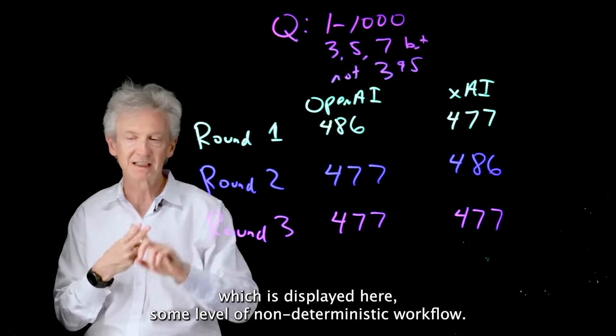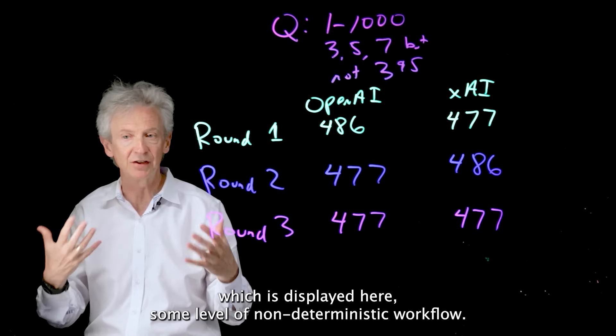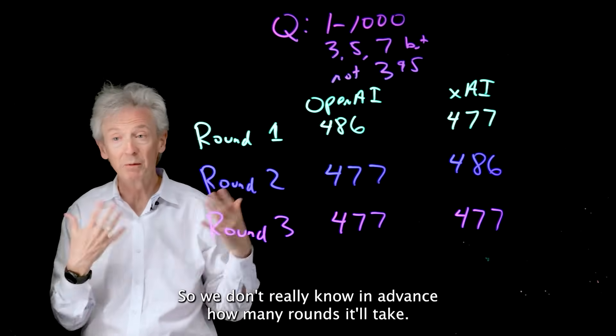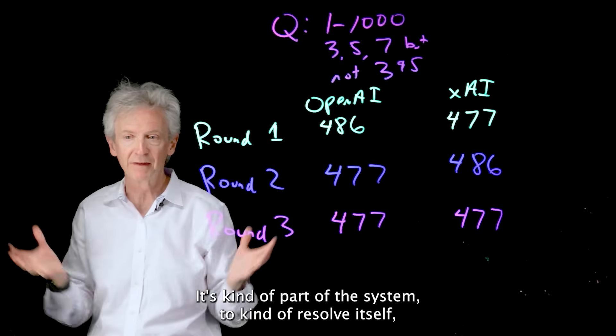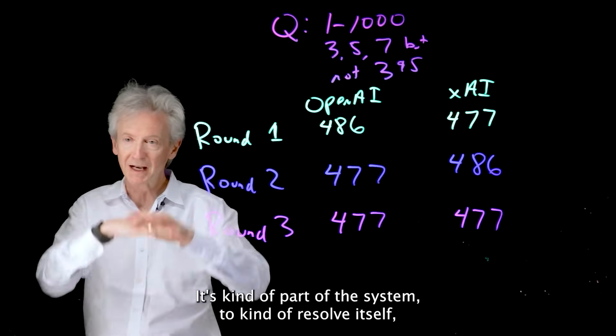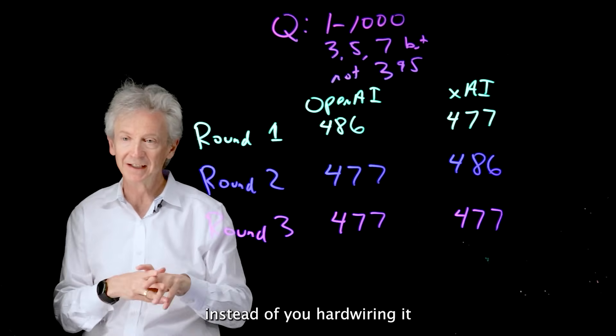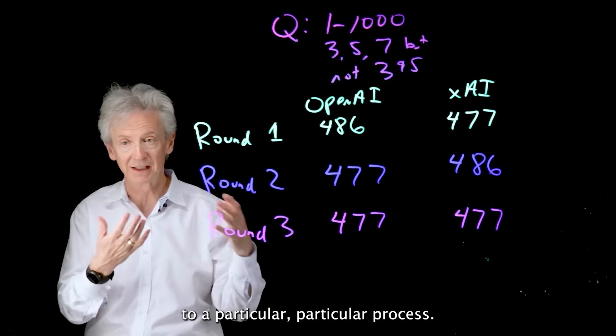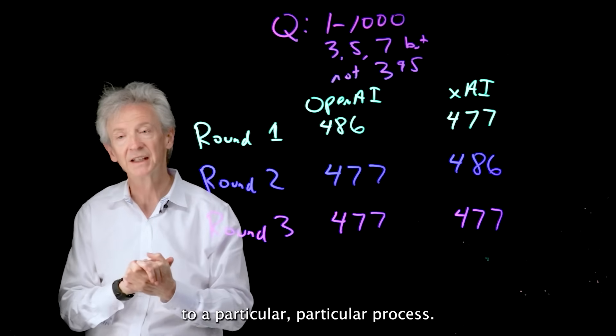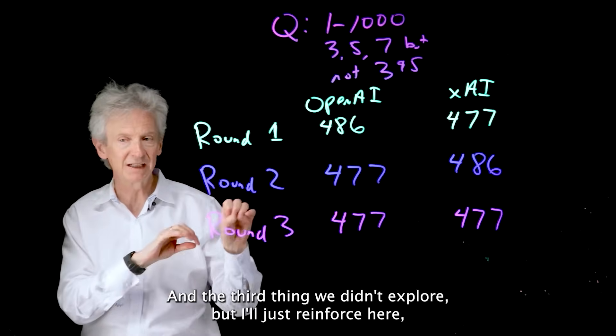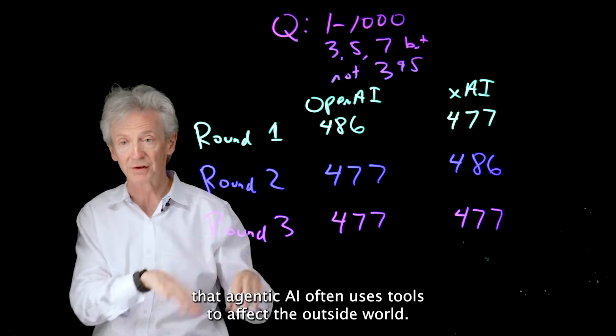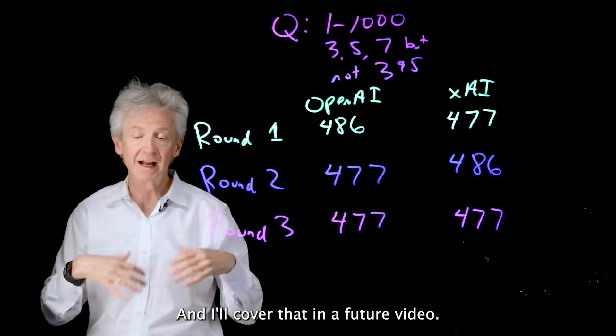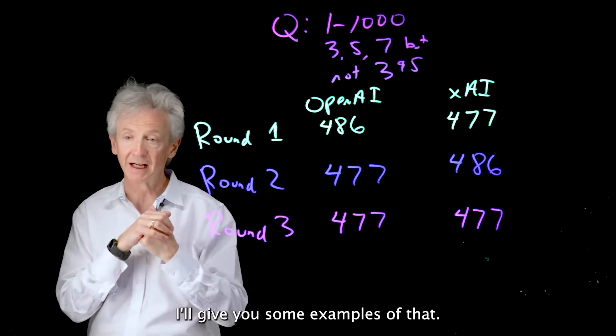Second thing about agentic AI, which is displayed here, some level of non-deterministic workflow. So we don't really know in advance how many rounds it'll take. It's kind of part of the system to resolve itself instead of you hardwiring it to a particular process. And the third thing we didn't explore, but I'll just reinforce here, that agentic AI often uses tools to affect the outside world. And I'll cover that in a future video, give you some examples of that.